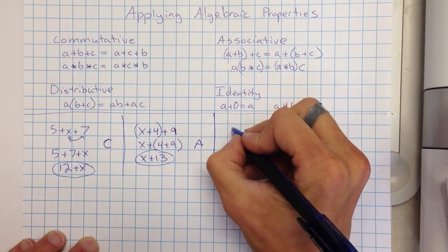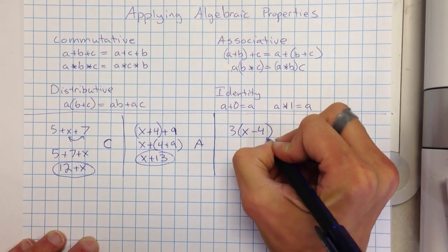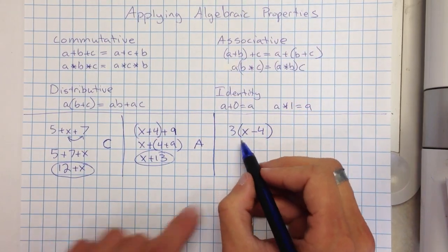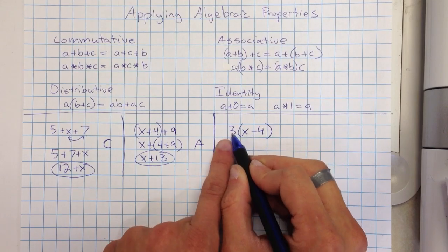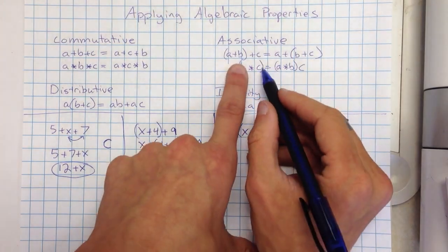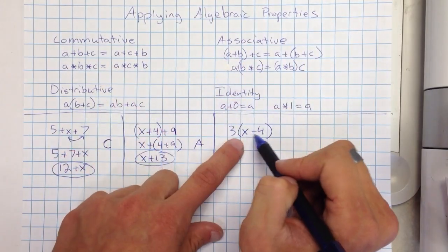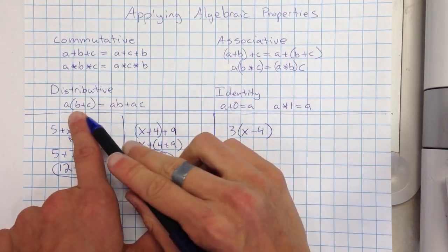We're going to look at another one. Let's say we had 3 times X minus 4. So now we'll notice here first that we have two different operations taking place, multiplication and subtraction. If I have those, I can't really use the associative property yet. I can't really use the commutative property because I have two different operations. But I can use the distributive property.